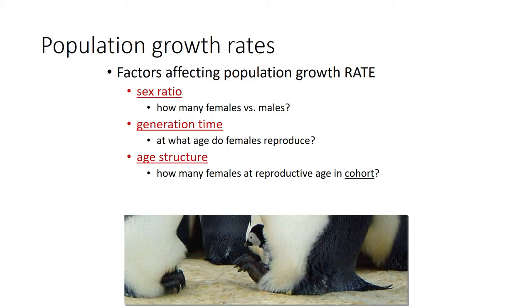When we think of how fast a population grows, there are some factors that affect population growth rate. Sex ratio is a big one — if you have a lot of males and very few females, your population is not going to grow very fast. Females are the limiting factor. Also, generation time: at what age do females reproduce, and how many times do they reproduce during their lifetime? These are all factors that determine whether a population is growing quickly or slowly.